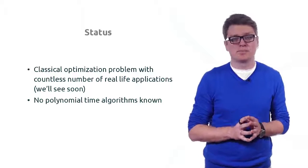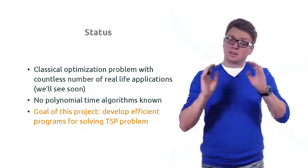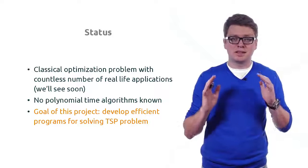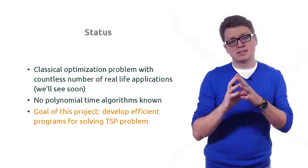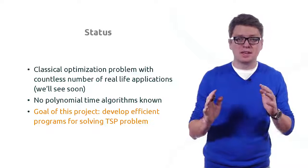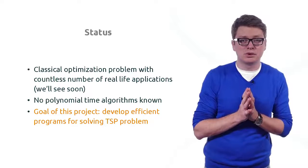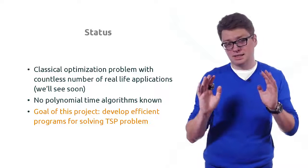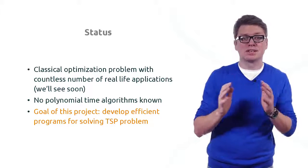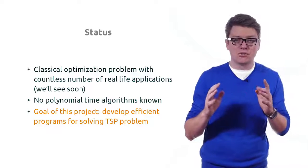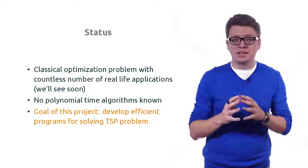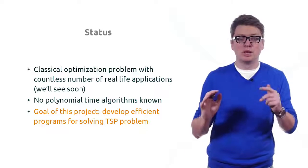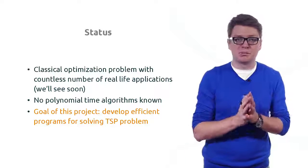At the core of this project is implementing efficient programs that can solve instances of roughly 20 or 30 nodes exactly and quickly in practice, and that can solve much larger instances approximately — meaning we output not necessarily an optimal cycle but a cycle guaranteed to be not much worse than the optimal one.